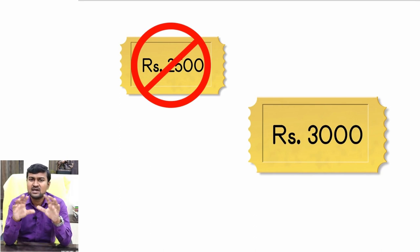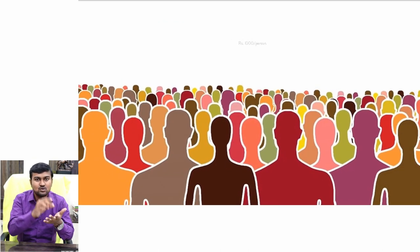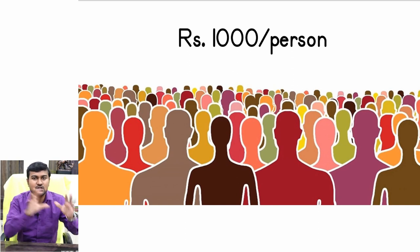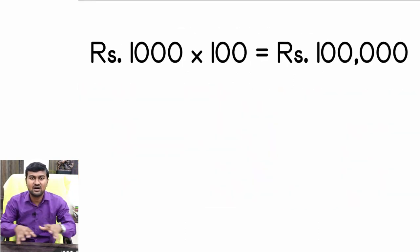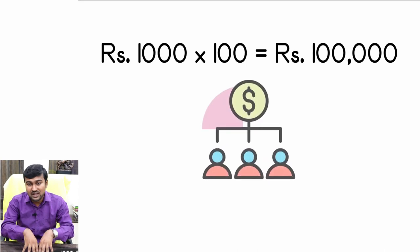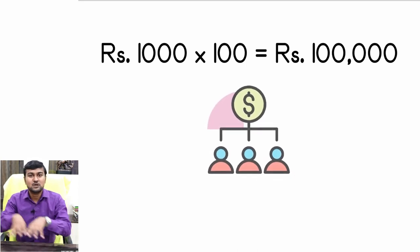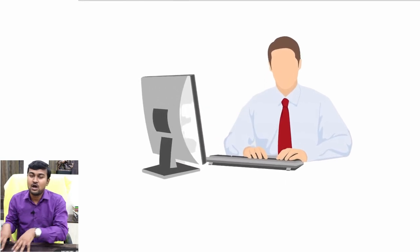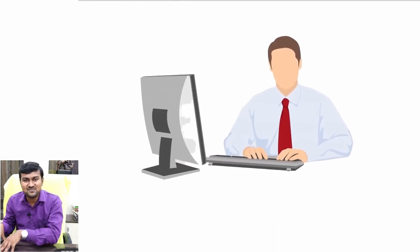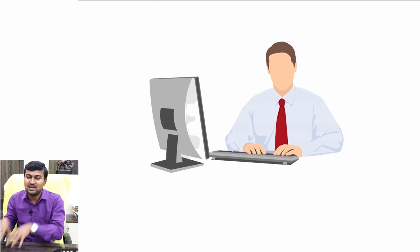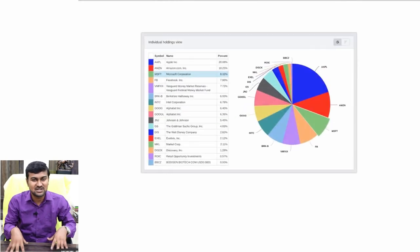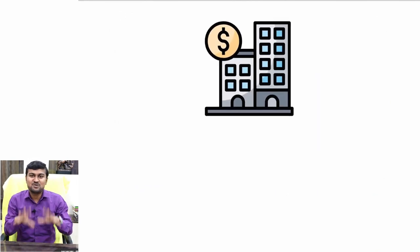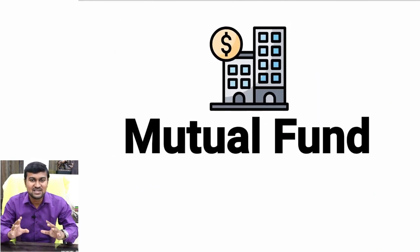There's another alternative. Suppose there are 100 persons, each with 1000 rupees, who pool their funds together. So 100 persons each contributing 1000 rupees means the entire fund comes to 1 lakh rupees. This 1 lakh rupees is handed over to some expert who manages the fund, investing it into various 20-30 shares. This is how mutual fund actually works.